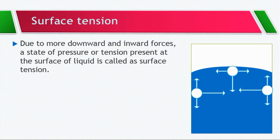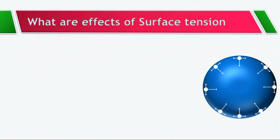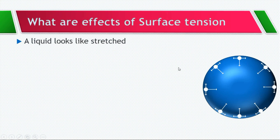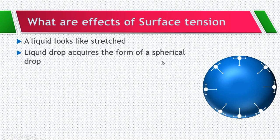So that is about surface tension. Now we have to discuss the effects of surface tension. Due to surface tension, a liquid looks like it is stretched and exerts an inward force or pressure on the rest of the liquid. Inward forces are generated at the surface, and because of these forces generated at the liquid surface, the liquid acquires the form of a spherical drop.